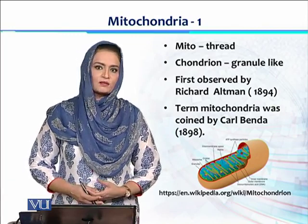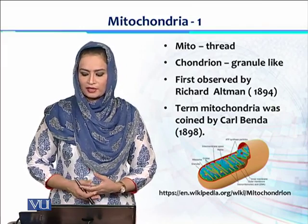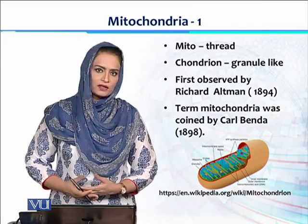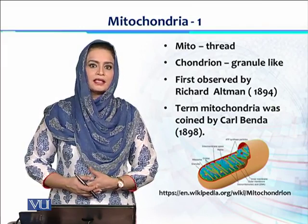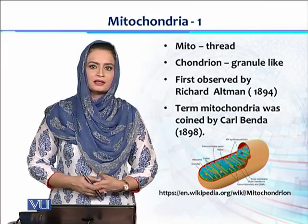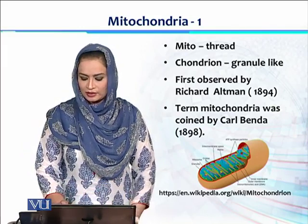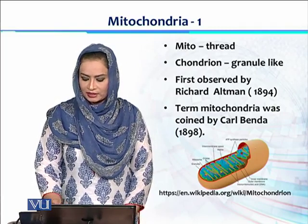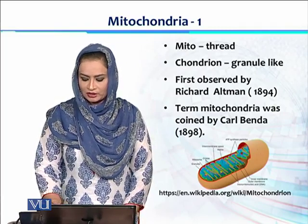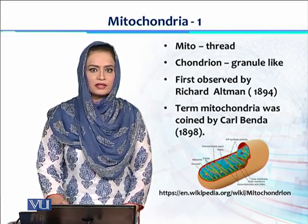It was first observed by Richard Altman in 1895, and it was given the name Mitochondria by Carl Benda in 1898. Mitochondria is just like a thread — a small oval-like structure which contains different granules.